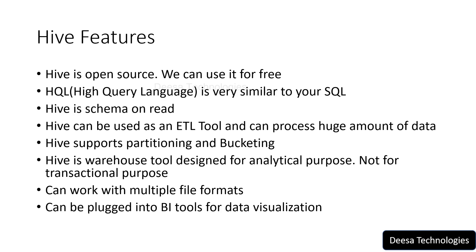Hive stores its metadata in the Hive Metastore, which is essentially a relational database. It holds metadata related to the tables and schemas you create. When you create a new Hive table, information like column names, data types, and table names is stored in the Hive Metastore. By default, Hive uses the Derby database for its meta storage.